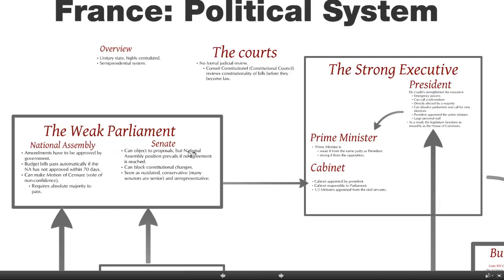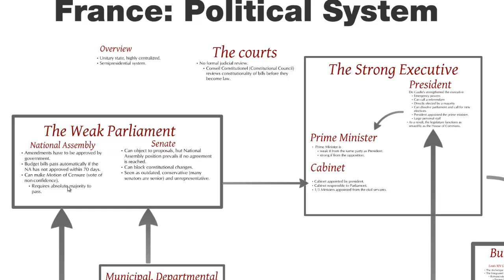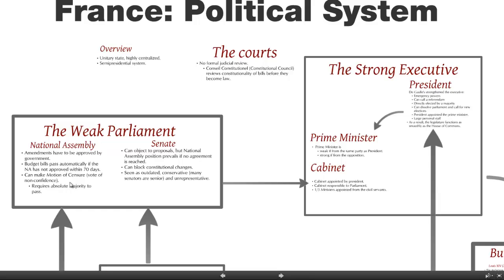The Senate can object to proposals and block constitutional changes, but in many ways it's seen as an outdated and unrepresentative body, much like people would point out problems with the House of Lords. The powers of the National Assembly have also been quite constrained by a series of qualifications.